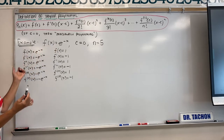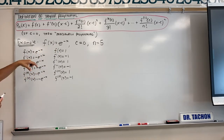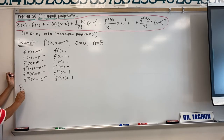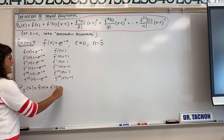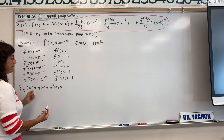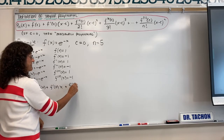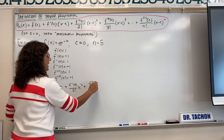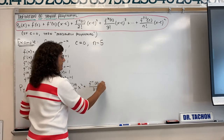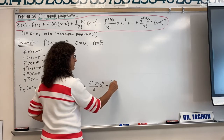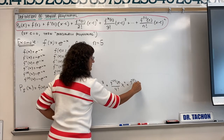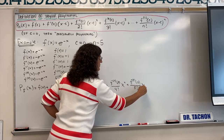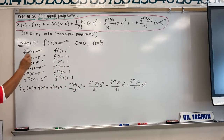We're going to write our Taylor polynomial with n equal to five. We'll have f of zero, plus f prime of zero times x, plus the second derivative evaluated at zero over two factorial times x squared, plus the third derivative evaluated at zero over three factorial times x cubed, plus the fourth derivative evaluated at zero over four factorial times x to the fourth, and plus the fifth derivative evaluated at zero over five factorial times x to the fifth. C is zero for this problem, so we drop the x minus zero terms.